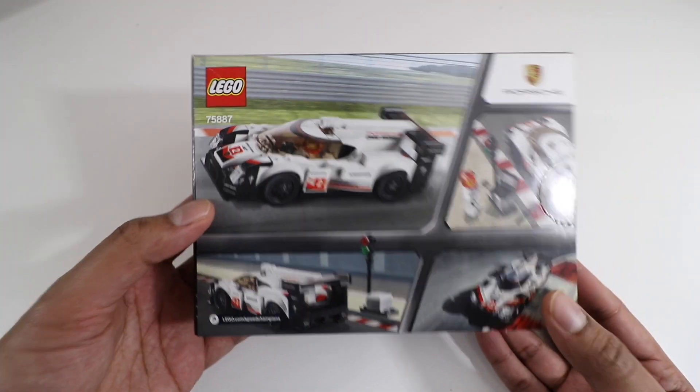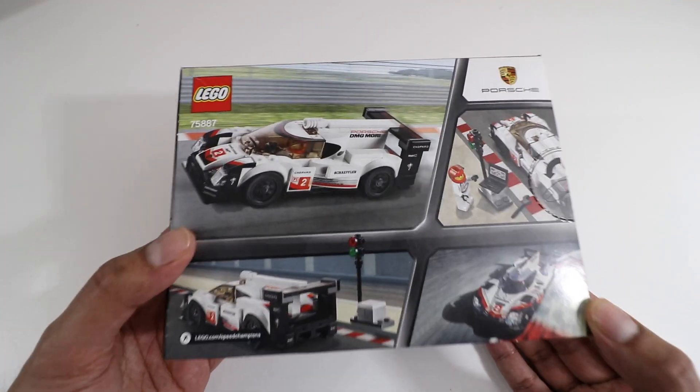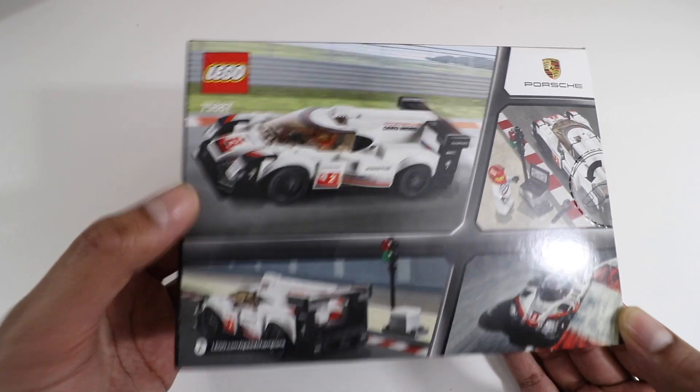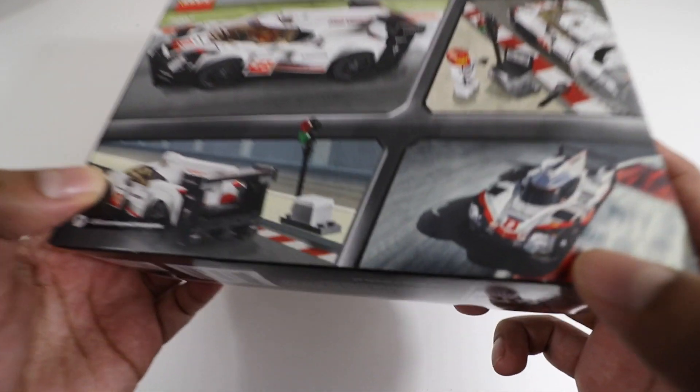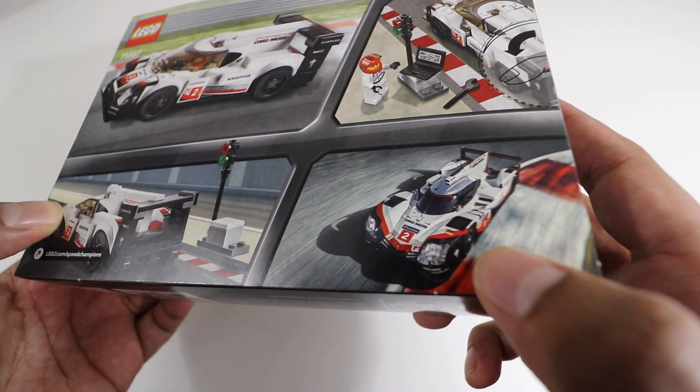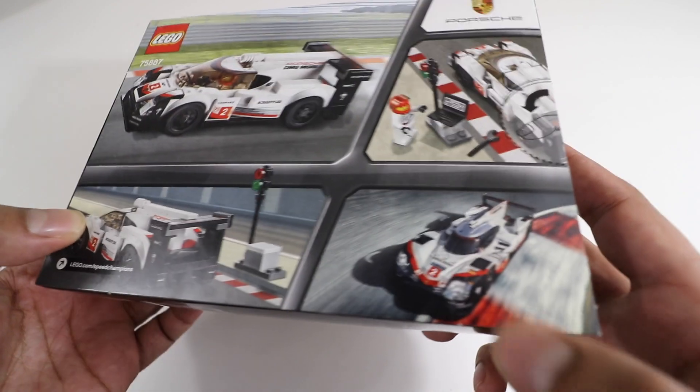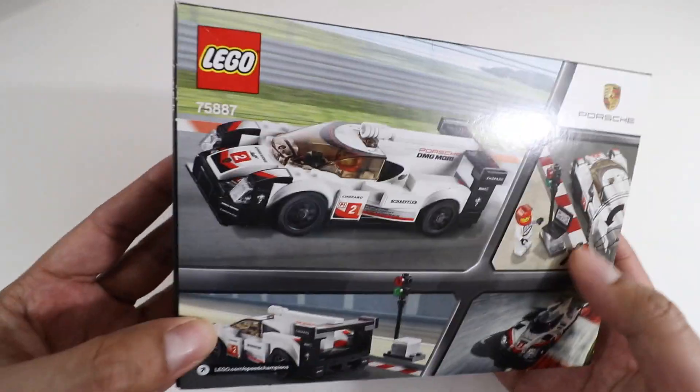And then as we flip it to the back here, it kind of shows a different angle of the car itself, so you see it zooming over here, and then you got the rear part of it as well. And then you see it looks like the guy working on it, it looks like you get a wrench as well. And then the bottom over here actually shows the car itself, the real life version of it, and it actually does look really identical to it. So let's go ahead and open this up and see what it looks like underneath.